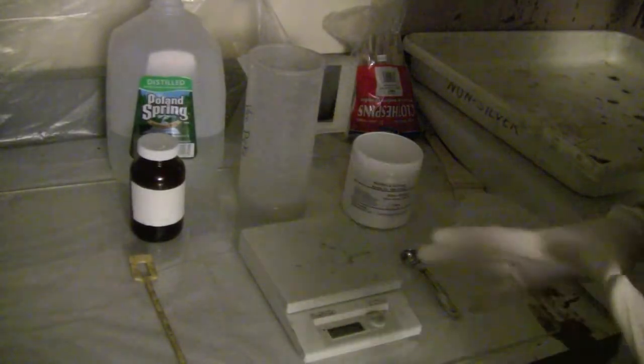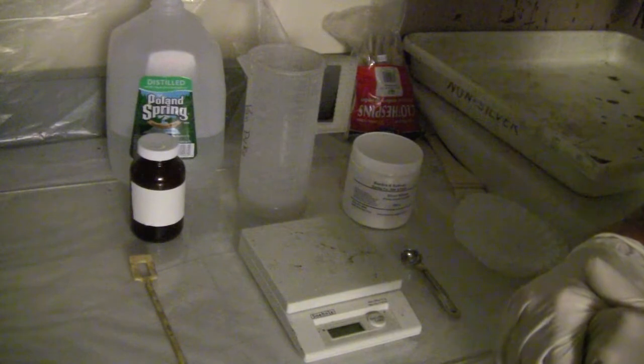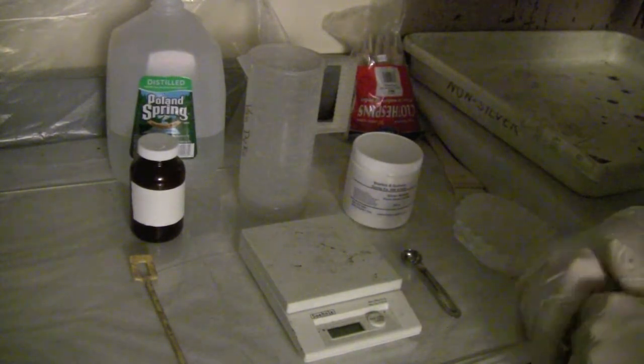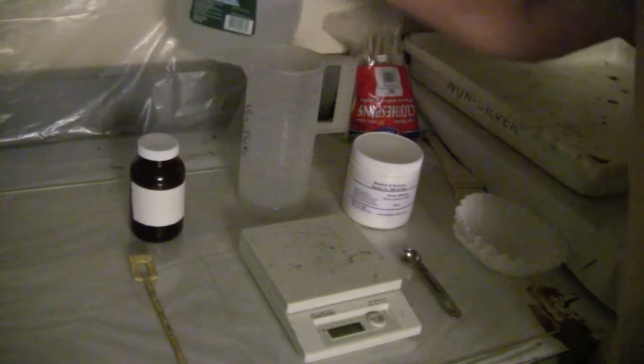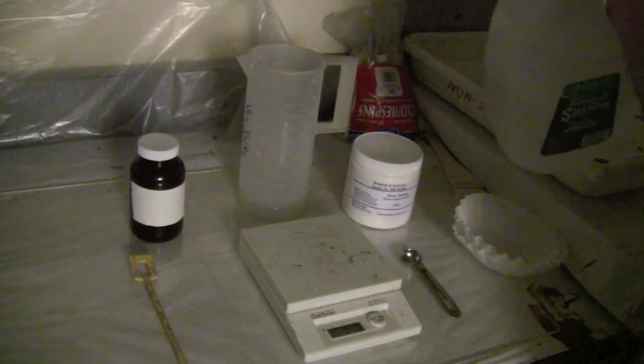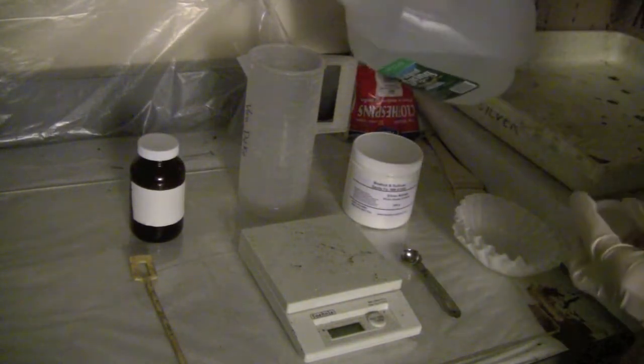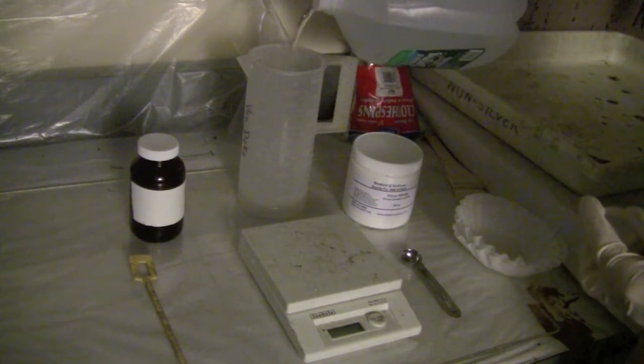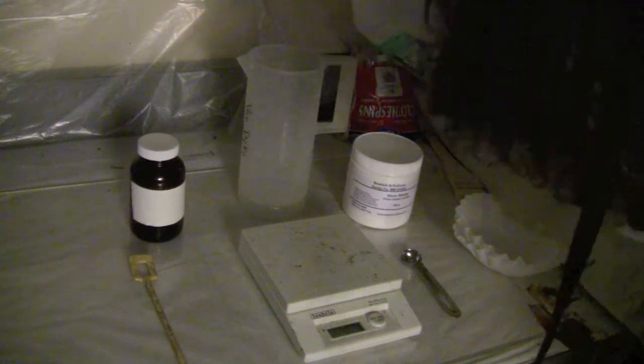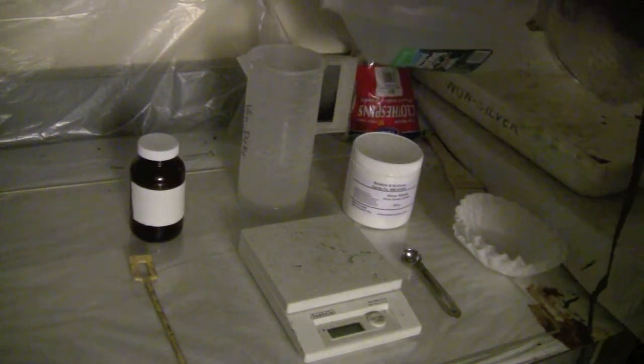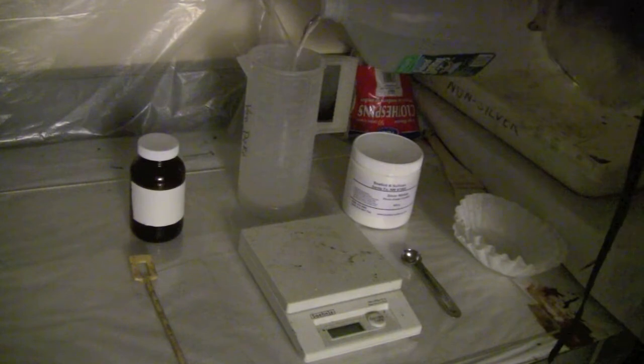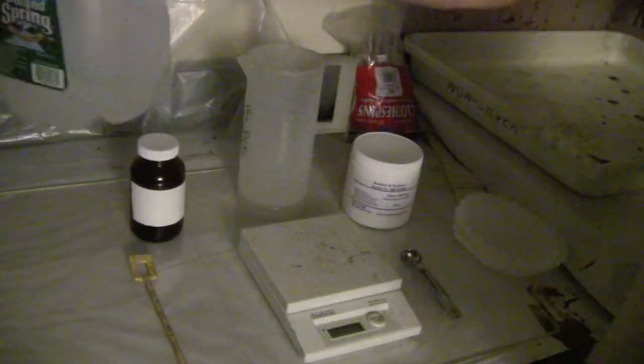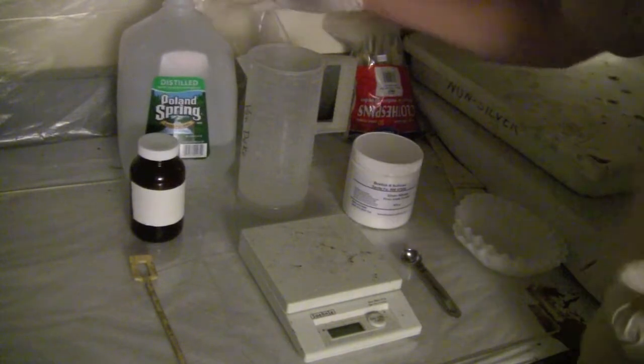We're going to get started making our 12% silver nitrate solution. We're going to be making 250 milliliters. To start, let's go ahead and add 200 milliliters of distilled water to our graduated cylinder. We'll be topping that off once we've got the silver in there because it will add some volume.